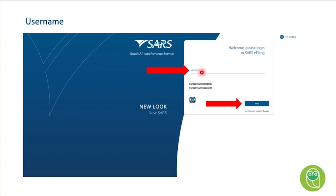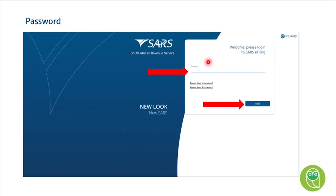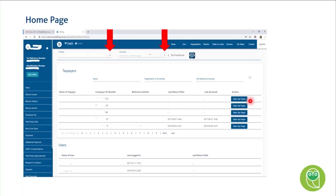Next is username and password. This is where you'll insert your username — I'm sure you've all gone through the pain of username and password changes. I won't get into that too much here, but I will be taking emails if you have any hassles with your username and password. You'll insert your username and click next, then insert your password and click login.